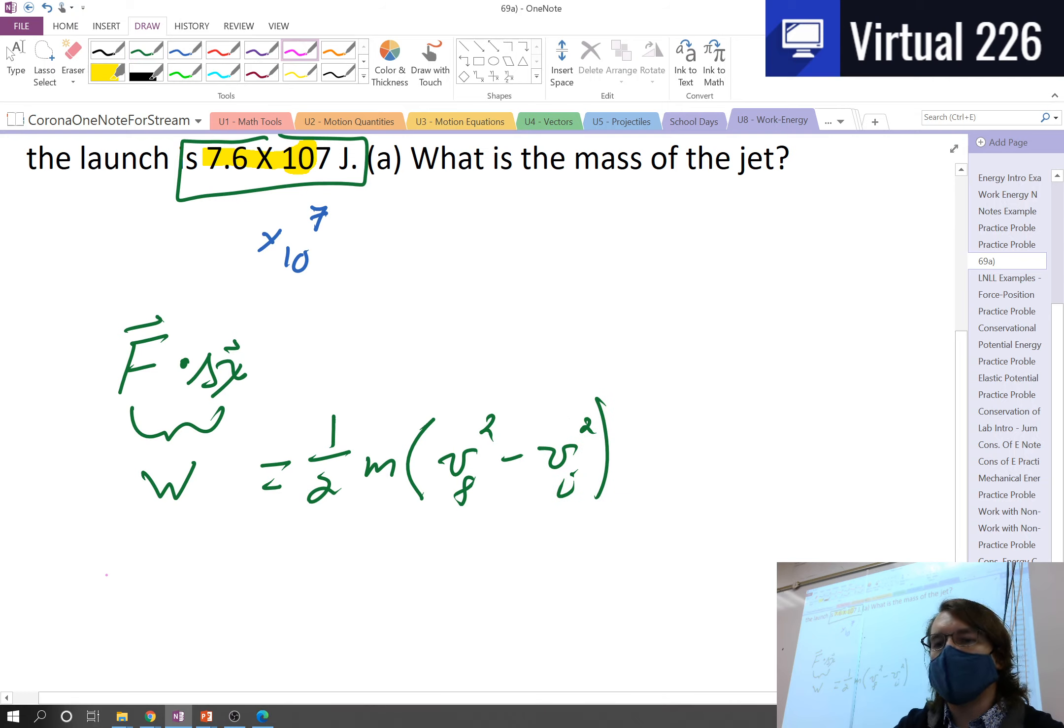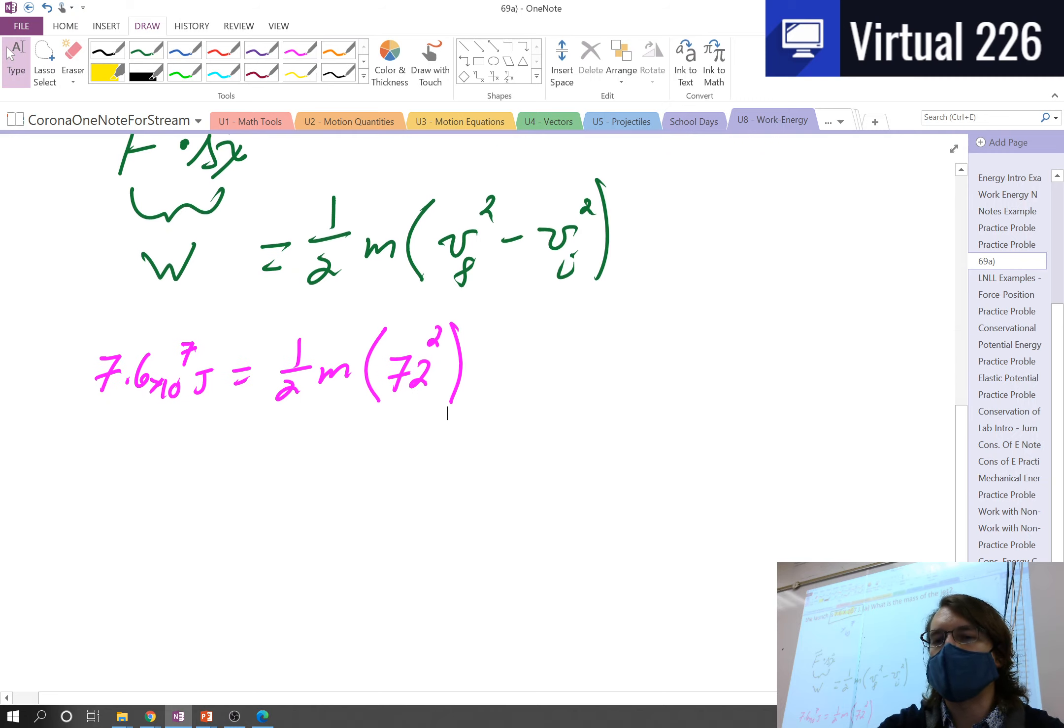So what we can say in this problem is 7.6 times 10 to the 7th joules equals 1 half m, the mass of the jet, which we're looking for, times our final velocity, 72 squared, minus our initial velocity is 0. So we don't even have to put anything there. We can just close out that parenthesis. And at this point, our problem is pretty much over.